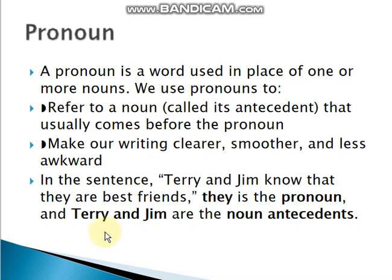Lekin agar hum noun ki jagah pronoun ko change kar dete hain, toh phir woh ek smooth writing ho jaati hai. For example: in the sentence 'Terry and Jim know that they are best friends' — 'they' is the pronoun and 'Terry and Jim' are the noun antecedent. Terry and Jim pehle aa rahe hain — yeh noun antecedent hai — aur 'they' pronoun hai jo Terry and Jim ko refer kar raha hai.